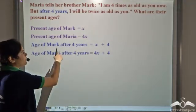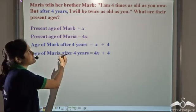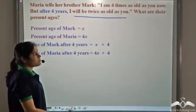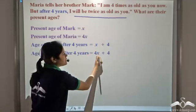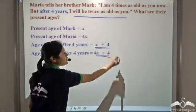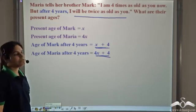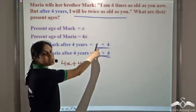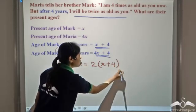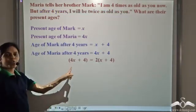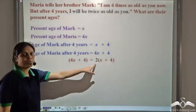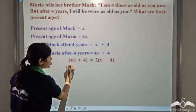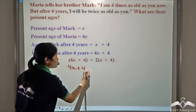Is there some relation between these two future ages? Yes — Maria will be twice as old as Mark after four years, so 4x+4 is twice of x+4. We can write this as the equation: 4x + 4 = 2(x + 4). This is a linear equation in one variable and we can solve it.